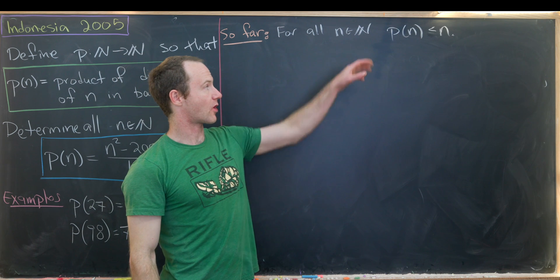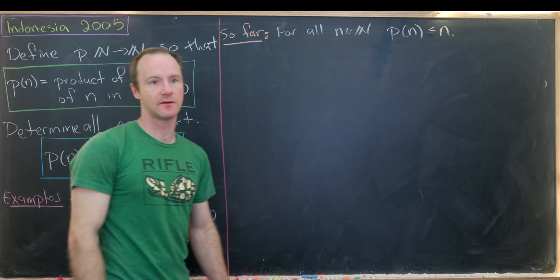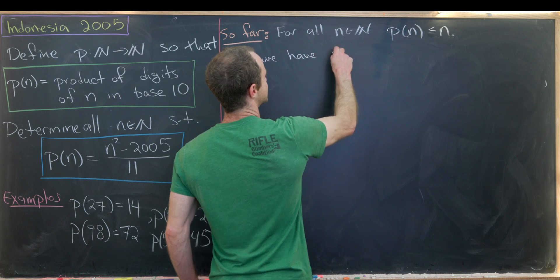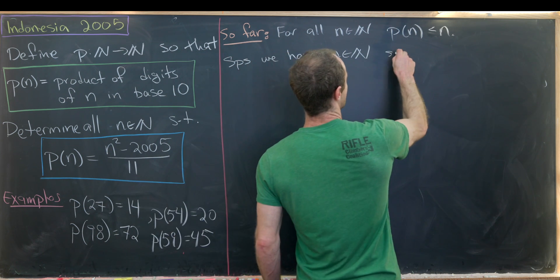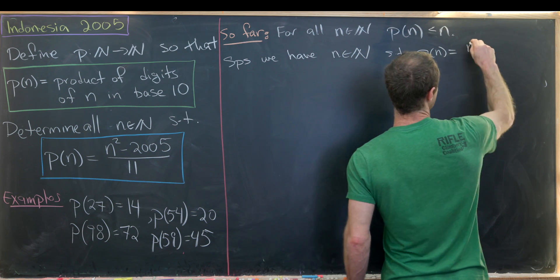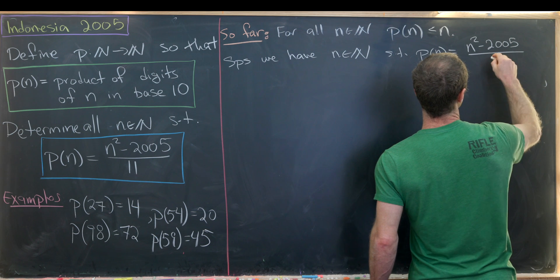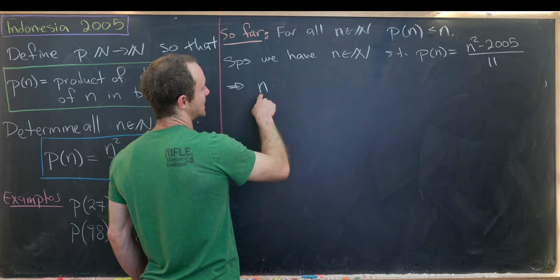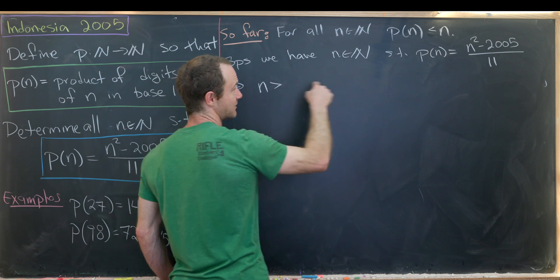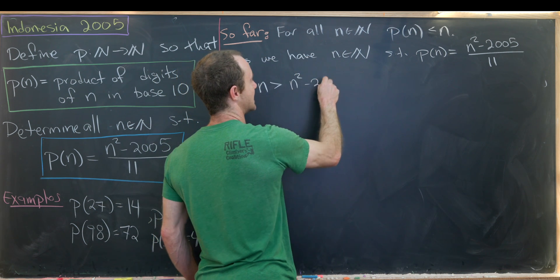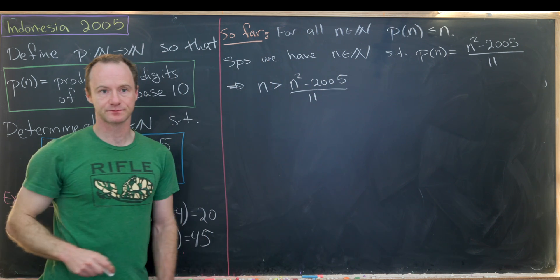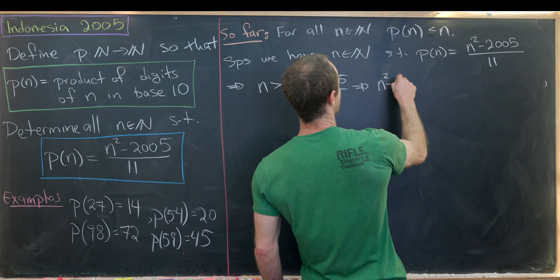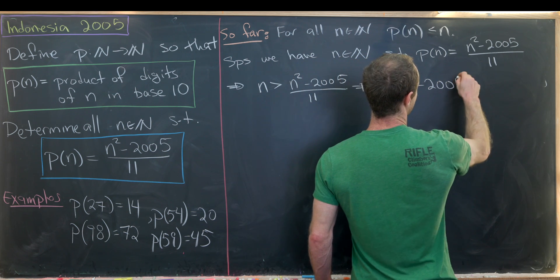So far we've shown that our product function is less than the input. In other words p of n is less than n. But now let's see what that does for our problem over here. So let's suppose we have some natural number n that solves this equation. So in other words such that p evaluated at n is the same thing as n squared minus 2005 all over 11. But what inequality does that set up? That tells me that n is going to be bigger than p of n. But I'll replace p of n with this guy right here. So n squared minus 2005 over 11. But then moving some things around we see that this is the same thing as n squared minus 11n minus 2005 is less than 0.